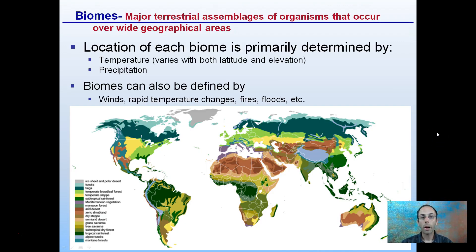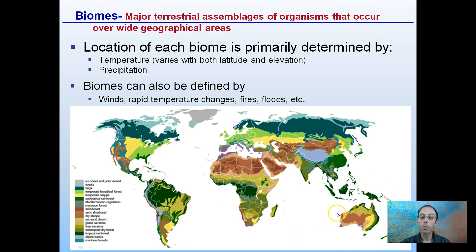Biomes are major terrestrial areas of organisms that occur over wide geographic areas — they are very large-scale. The location of each biome is primarily defined by the temperature and precipitation an area receives. Biomes can also be defined by winds, rapid temperature changes, fires, floods, and so on. The key part is that biomes are major terrestrial areas located within the geographic range of the world.